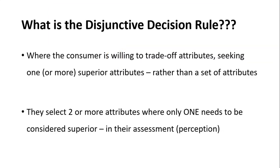So what is the disjunctive decision rule? This is where we are looking for one particular attribute that will work for us. We're willing to accept that it is unlikely that the offering will have everything we need. So if it's got a fantastic swimming pool, that'll be a good hotel. If it's got a fantastic view, that'll be a good hotel. If it's got a fantastic level of service, that's a good hotel — actually trying to limit down the set. We select two or more attributes and we want at least one of them to be really good. We typically set our expectations quite high and we're using our own perception.